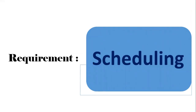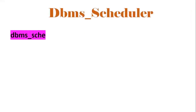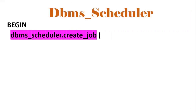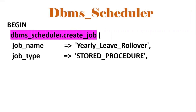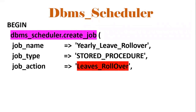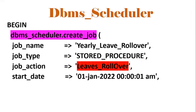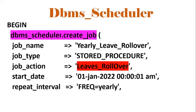The third condition is that we need to schedule the leaves_rollover procedure automatically using DBMS_SCHEDULER. The job_name is provided, job_type is stored procedure, job_action is the procedure name — leaves_rollover. The start_date is set to January 1st 2022 at the first second — meaning it executes at the very start of the new year. The repeat_interval is set to yearly so it runs every year: 2022, 2023, and so on. Enabled is set to true.